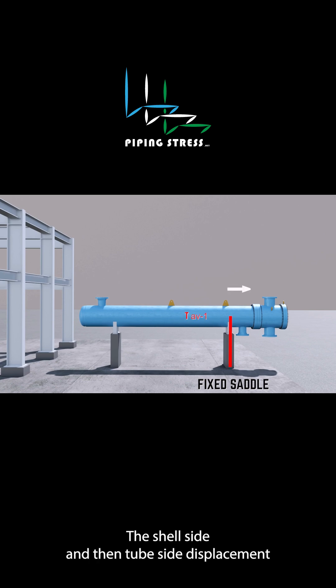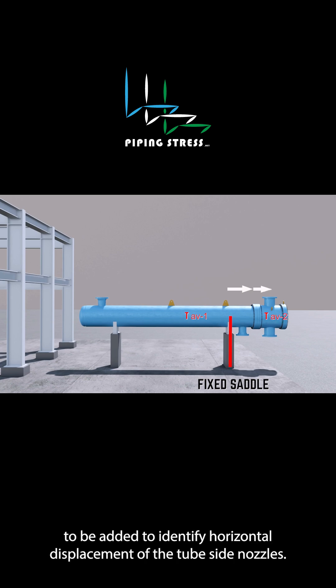The shell side and tube side displacements are to be added together to identify the horizontal displacement of the tube side nozzles.